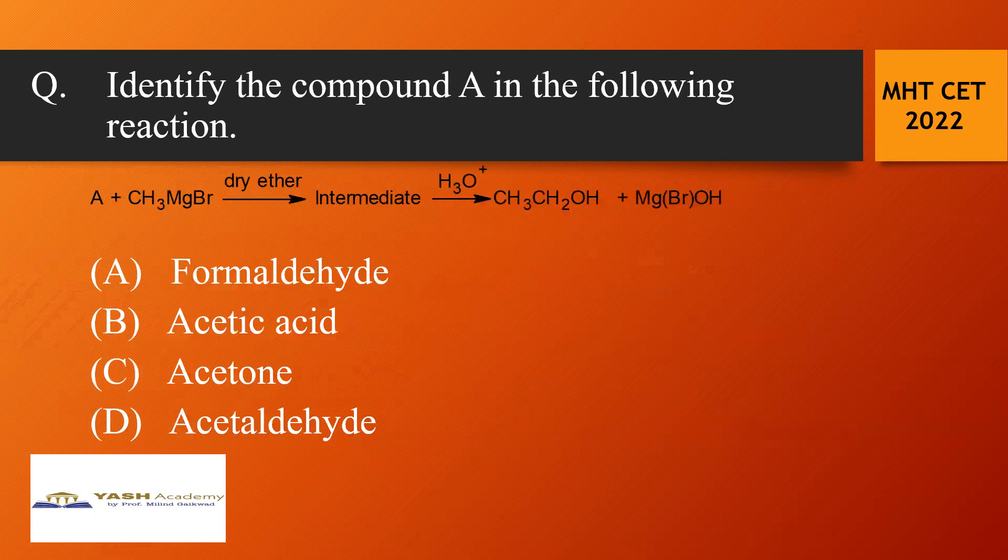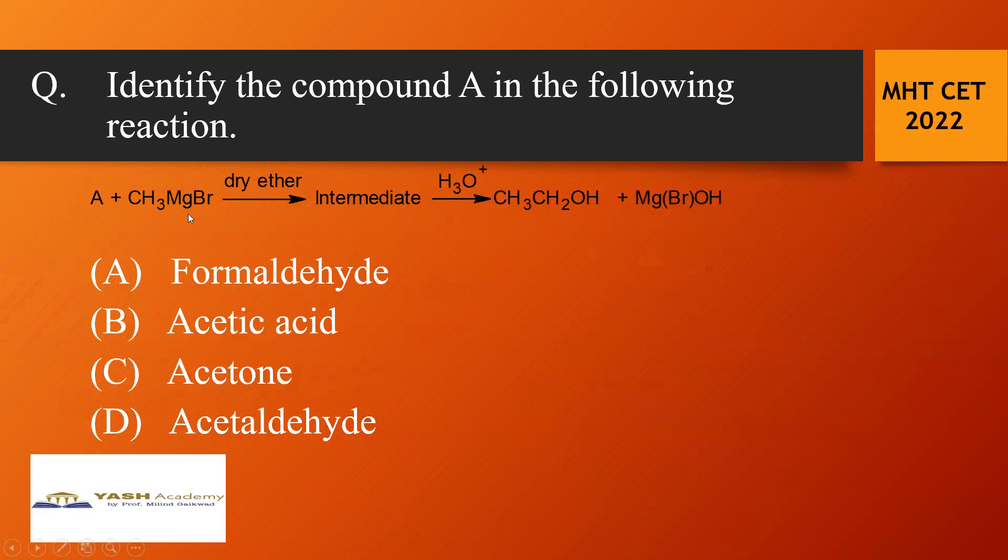Next is identify the compound A in the following reaction. Here you are given A and is reacted with the Grignard reagent that is methyl magnesium bromide in presence of dry ether.